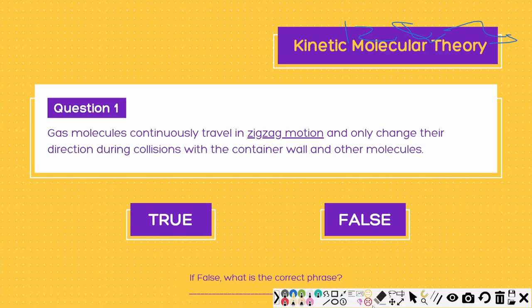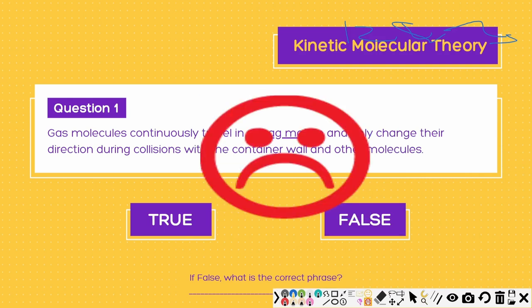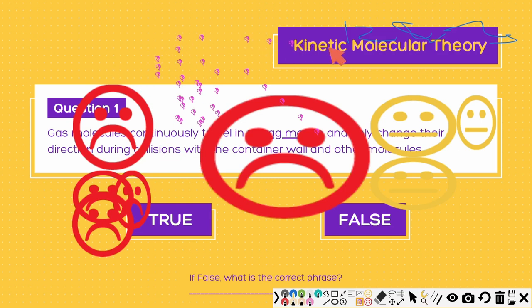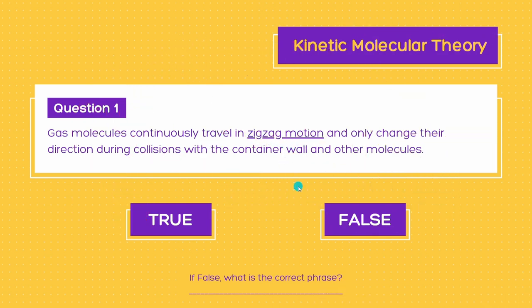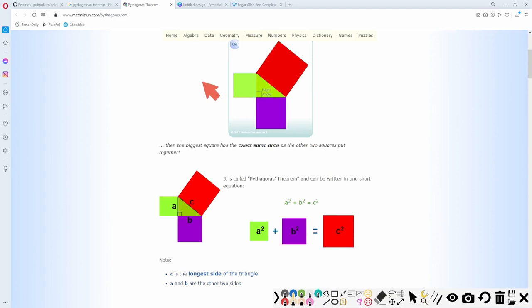You can also use clip arts, which can be game-changing for presentations since you can upload your own. The default ones are included — you can place a sad face, a thumbs down, or use a clip art as a brush stroke so it stamps that image everywhere you click. Clear all of that and open the toolbar again. There's also a numbered step tool, useful for showing step-by-step processes like formulas or guides.